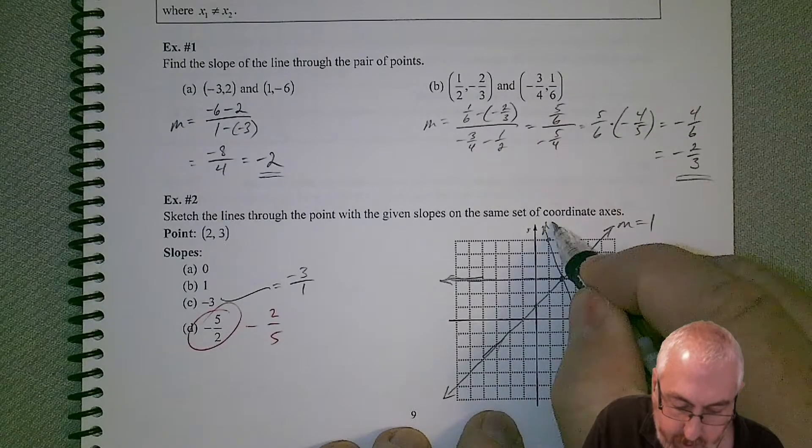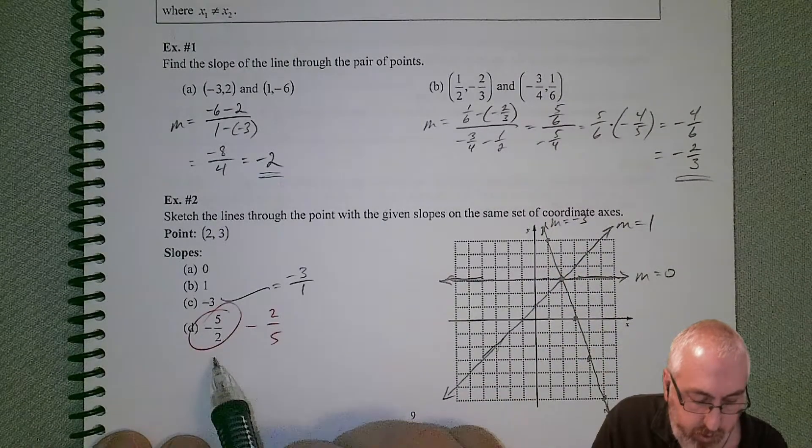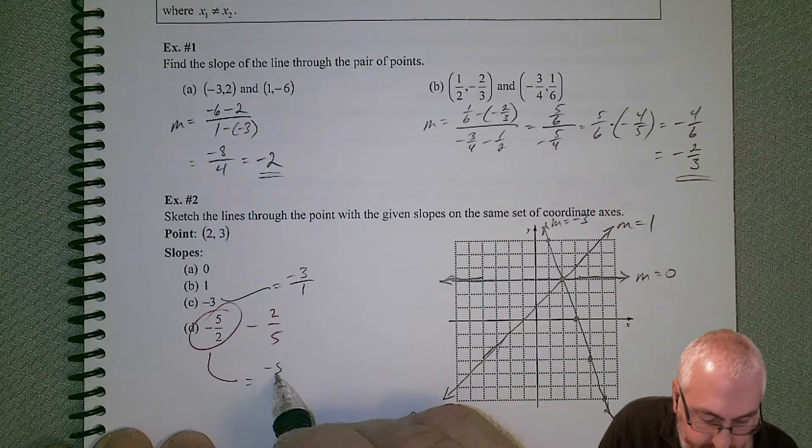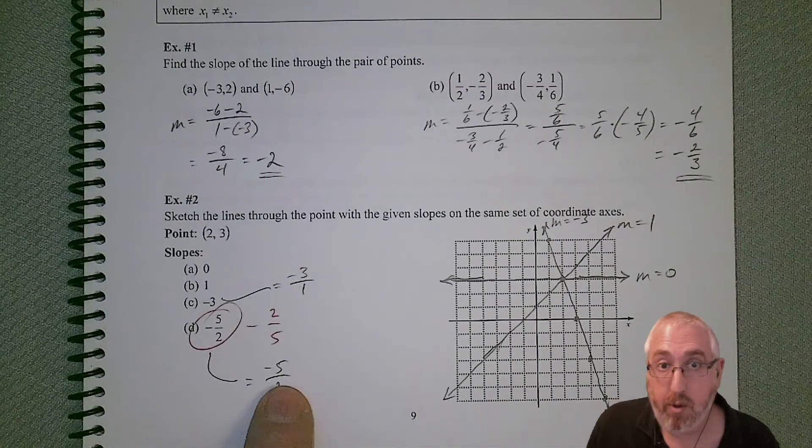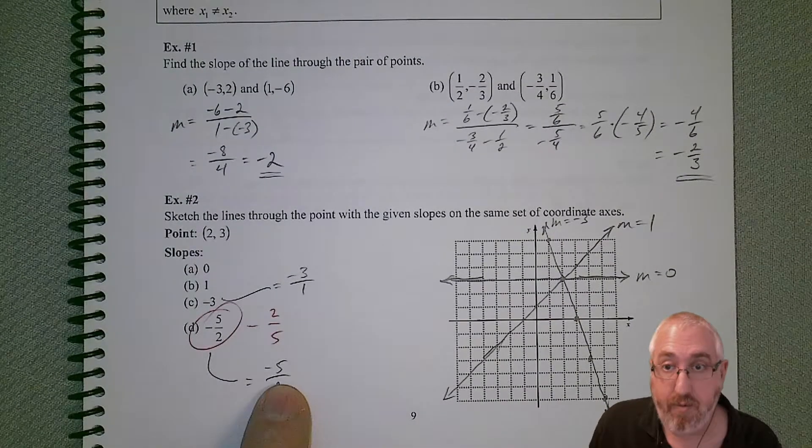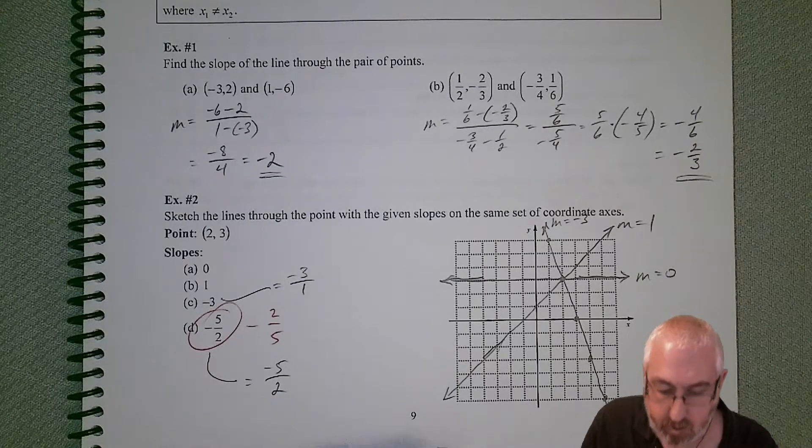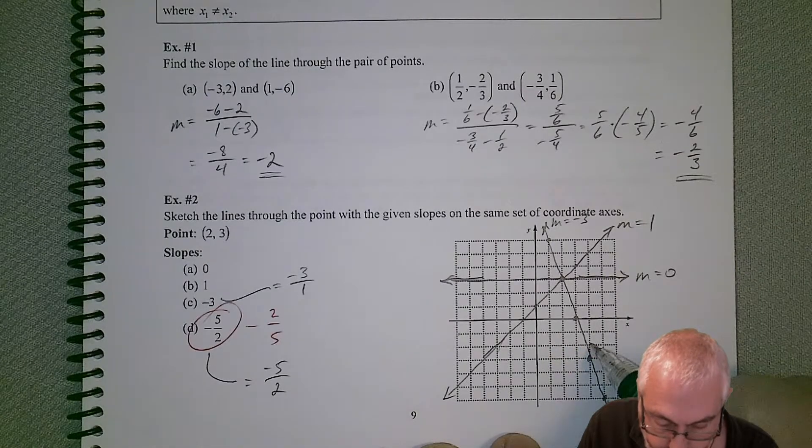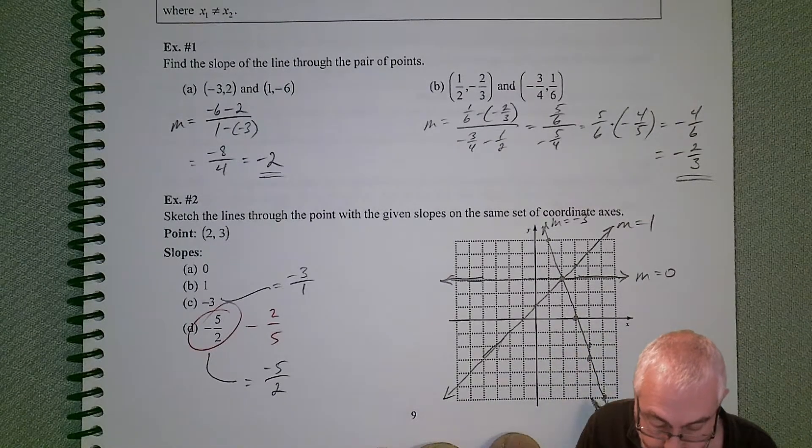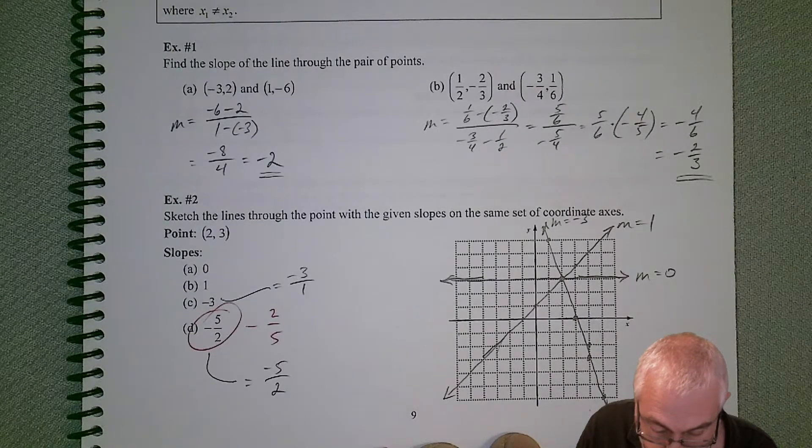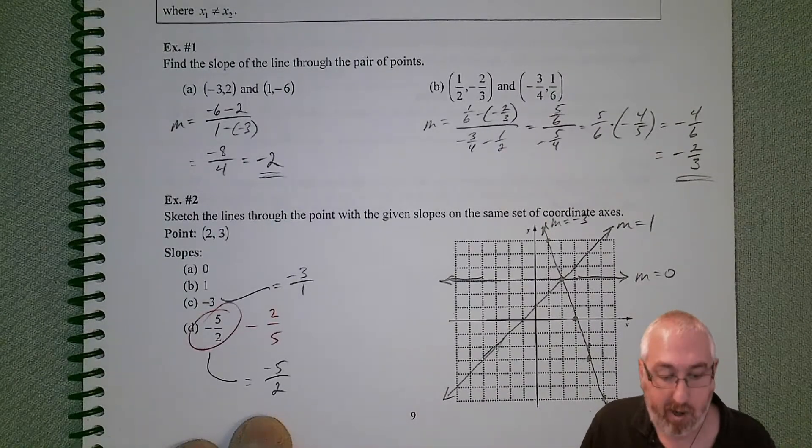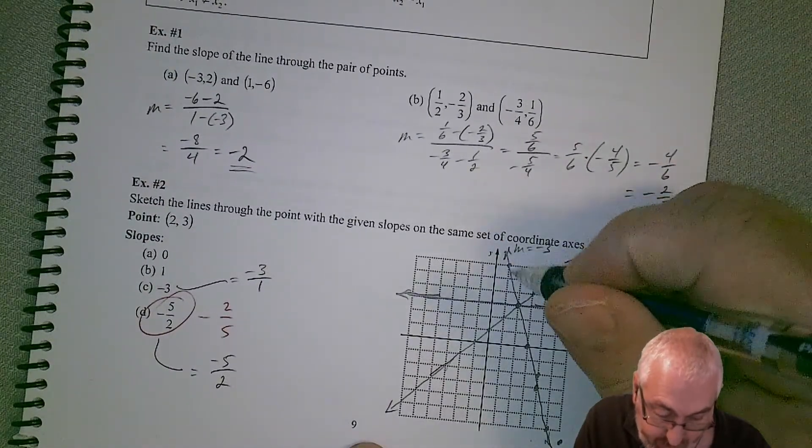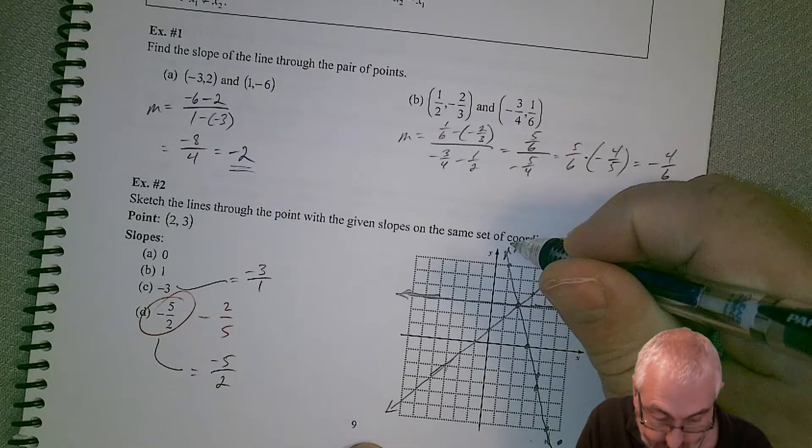Once you get some points, then you can draw your line. So there's M equal to negative 3. And then our last one, which is the negative 5 halves. So we want a negative 5 over 2. Now we're dropping 5 units for every 2 units to the right. So 1, 2, 3, 4, 5 over 2. 1, 2, 3, 4, 5 over 2. You can kind of see why I wanted to change it. It doesn't really fit well on this graph. But we could draw it.